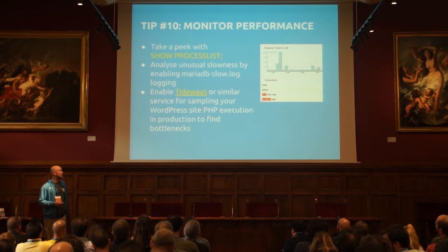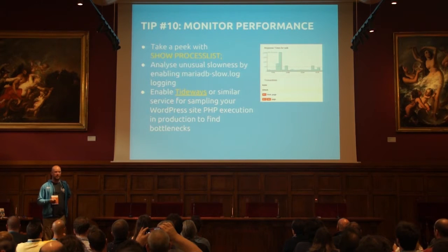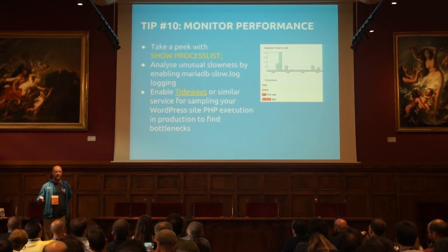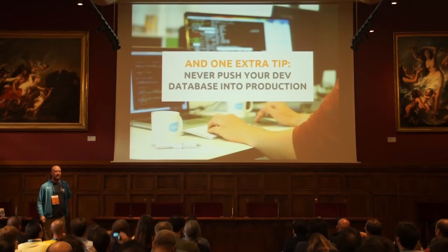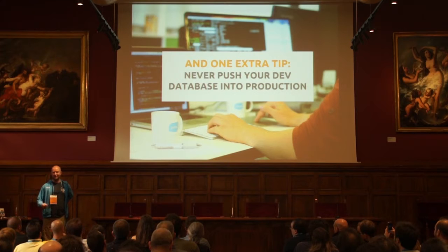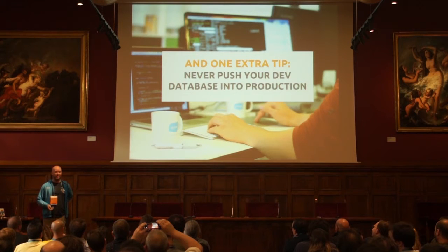My last tip: do something to monitor your performance. You can use SHOW PROCESSLIST in the console. Or enable MariaDB's slow log, so you can log all queries that take more than five seconds and then analyze what's in the log. There are also tools like Tideways that let you analyze what's happening in your PHP code and database in real time in production. And one final extra tip: never push your database into production. This happens quite often because people do some things in code and some in settings — and settings are in the database — and then they're tempted to push the database into production. That's bad. Try to do something else.